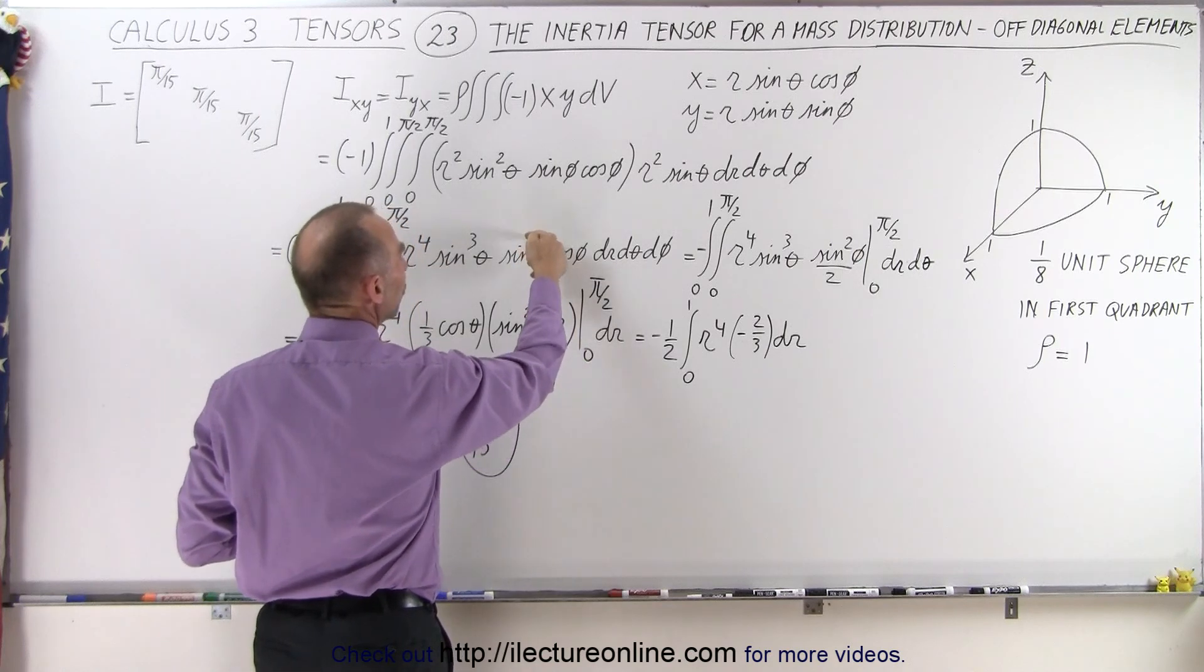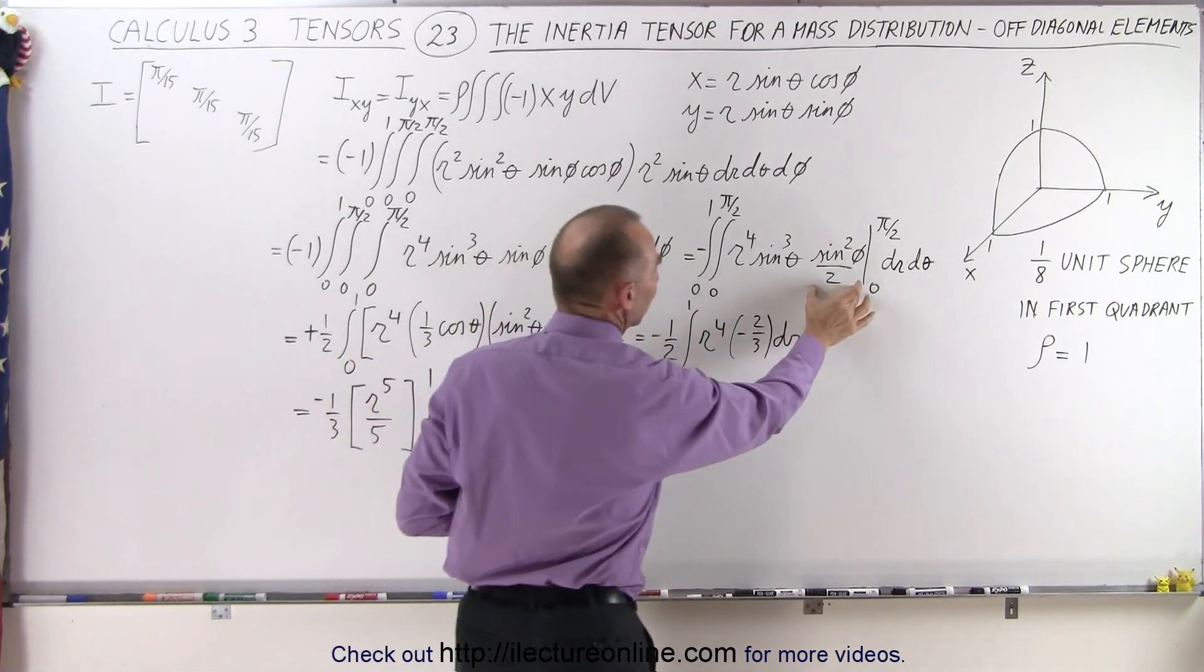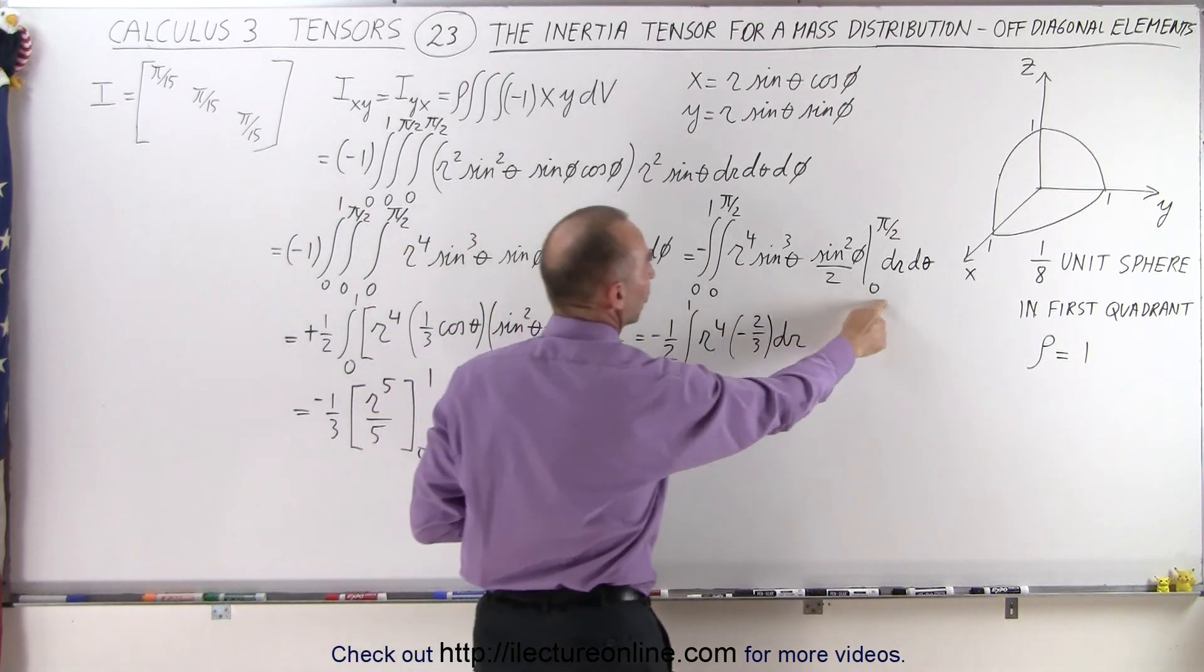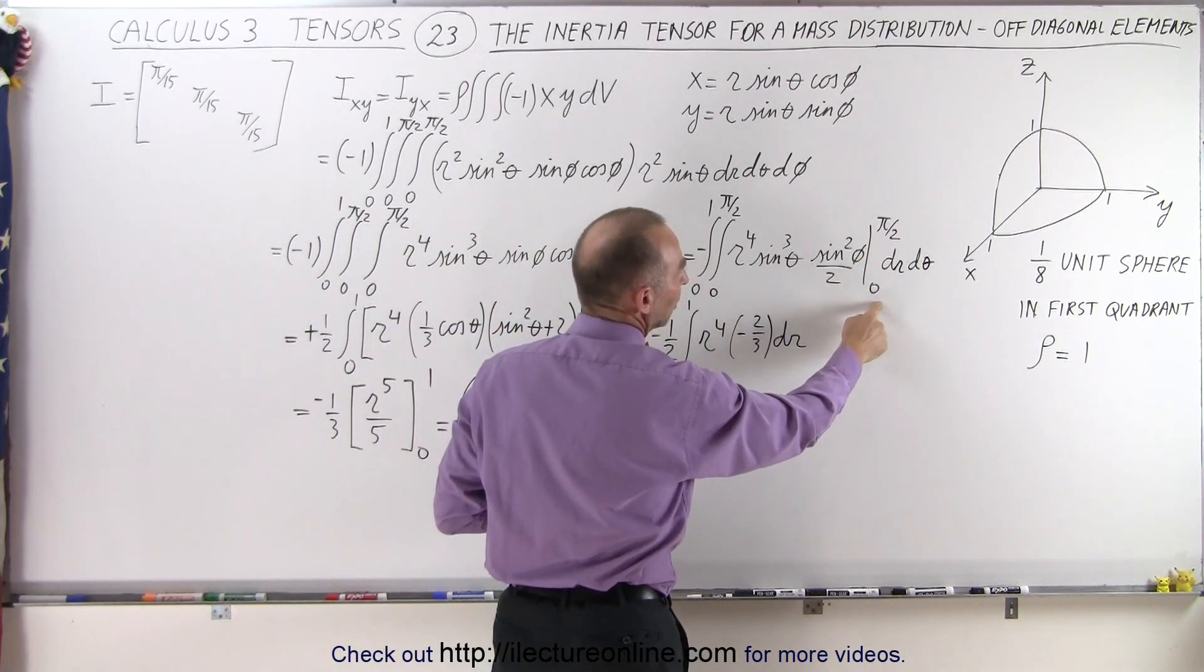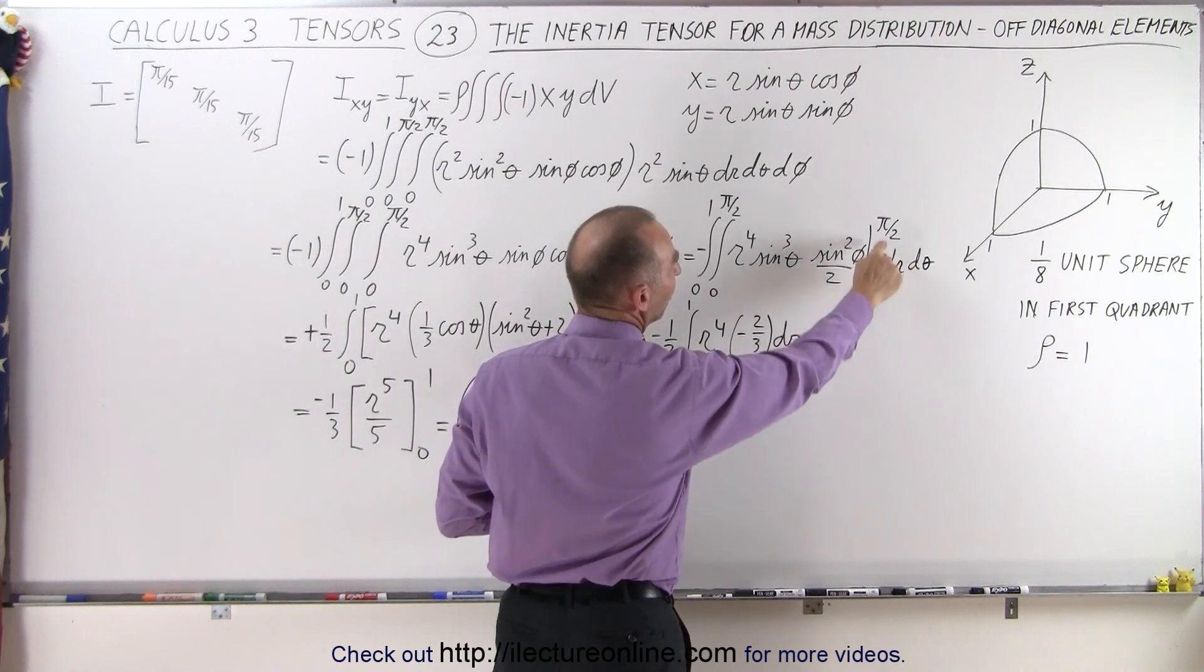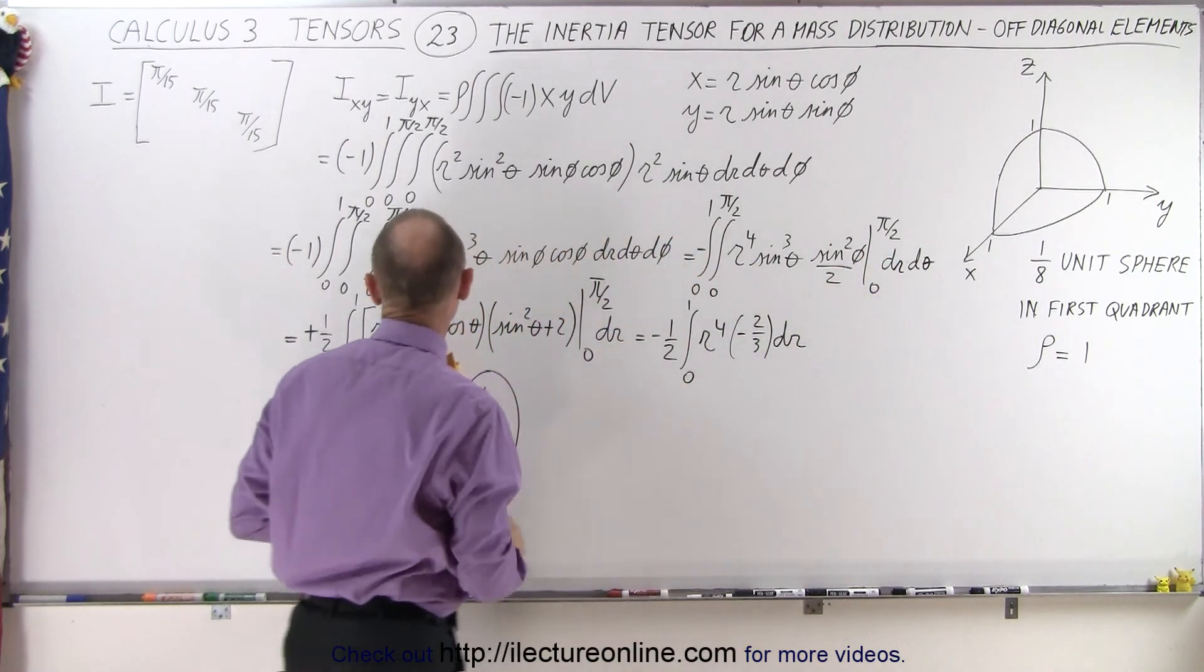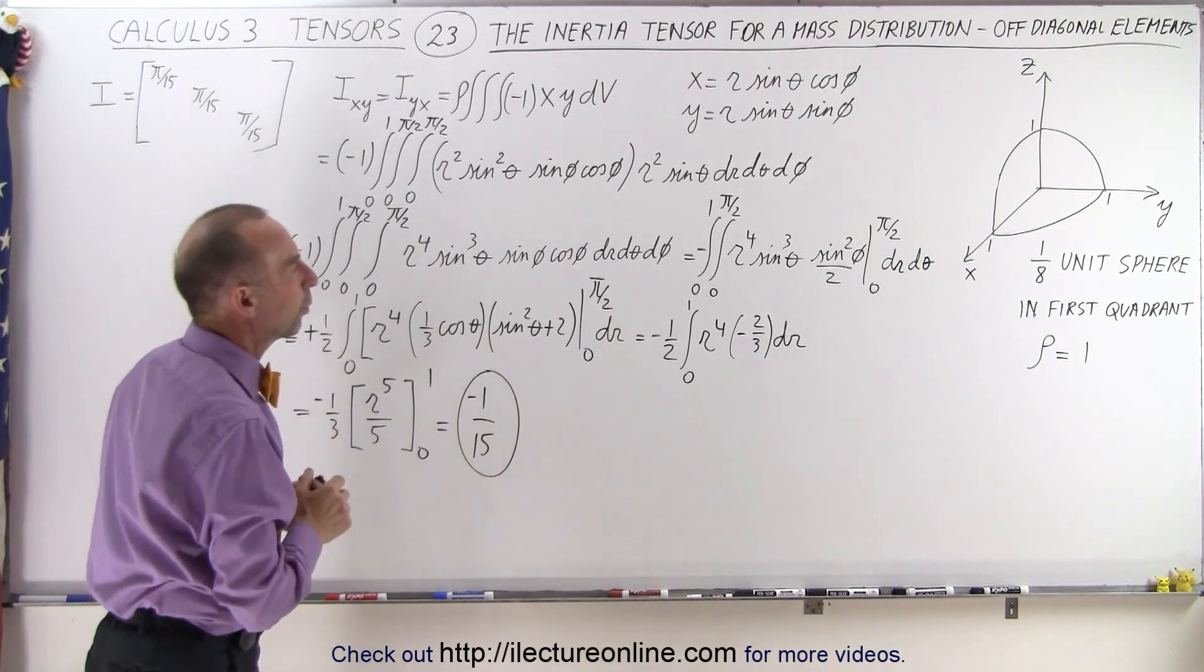So when we integrate, we get sine squared over 2, which is what we have over here, and the cosine of phi dphi, they drop off. The limits from 0 to pi over 2, when we plug in the upper, the lower limit, we get 0, plug in the upper limit, we get 1, 1 over 2, put that in the front, we end up with a plus 1/2.